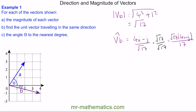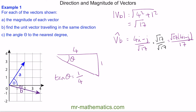For the angle theta, I'll draw the right-angle triangle. We have four in the i direction and minus one in the j direction, and this is theta. We use tan, which is the opposite divided by the adjacent. So theta equals arc tan of one quarter, which is approximately 14 degrees.